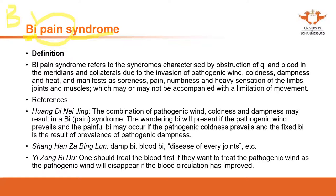From this syndrome, from the name itself, it tells you that the patient may present with different kinds of pain. It is described in Huangdi Neijing that the combination of the pathogenic wind, coldness, and dampness will result in Bi. So the blockage from wind, coldness, and dampness is Bi. The combination from these pathogenic factors will cause blockage.